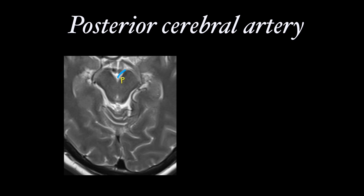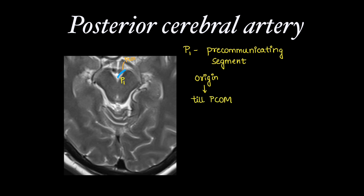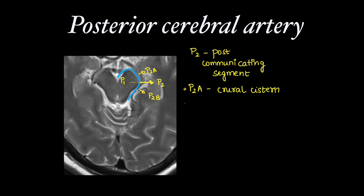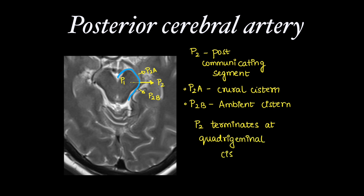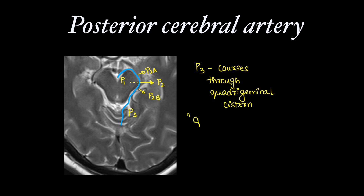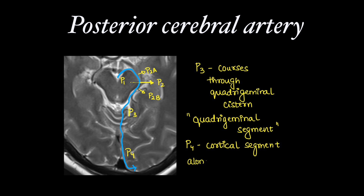Coming to the posterior cerebral artery and its segments: P1, or the pre-communicating segment, extends from its origin until the posterior communicating artery. The P2 segment, or post-communicating segment, is divided into P2A and P2B. P2A passes through the crural cistern and P2B passes through the ambient cistern, terminating at the quadrigeminal cistern. The P3 segment courses through the quadrigeminal cistern and hence is called the quadrigeminal segment. P4, or the cortical segment, courses along the sulci of the occipital lobe.